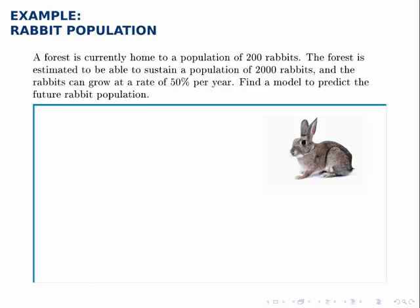We want to find a model to predict the future rabbit population. Here we'll just use the logistic model, where M is the maximum sustainable population, or the carrying capacity, in this case 2,000.